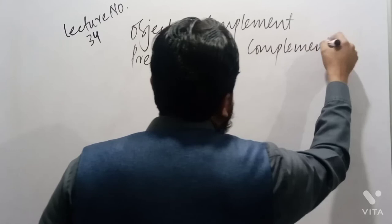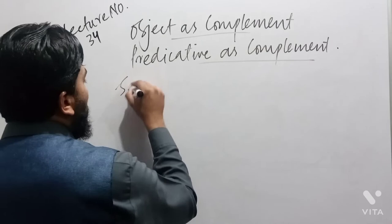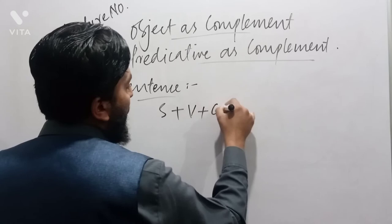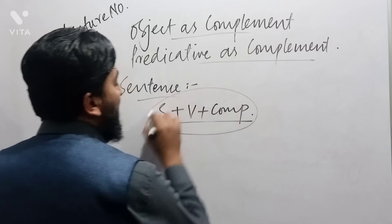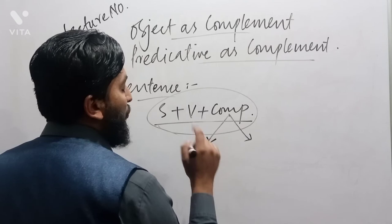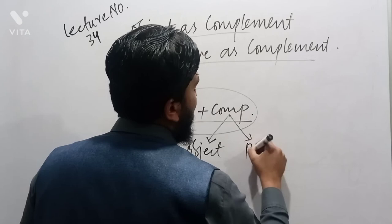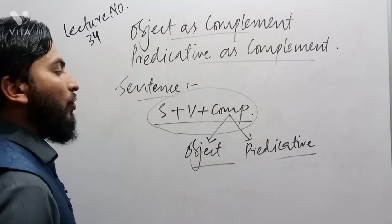These two parts will be discussed in my next videos. A sentence is actually called subject plus verb plus compliment — that is the correct structure of a sentence. Within compliment, we identify two things: one is object and the second is predicative. In the next video, I will discuss object as compliment and predicative as compliment. Please watch my channel, like it and subscribe it. Thank you.